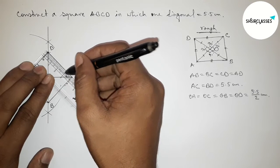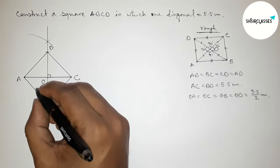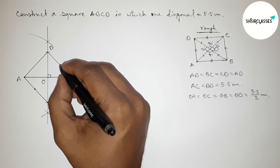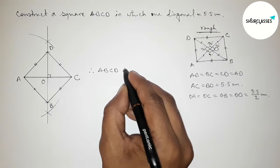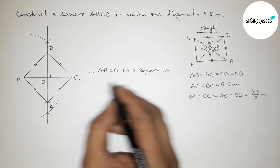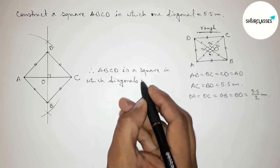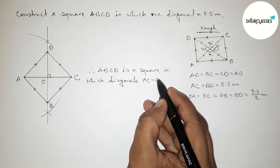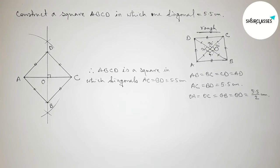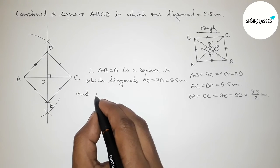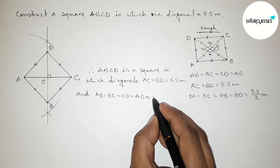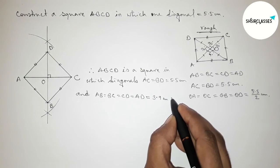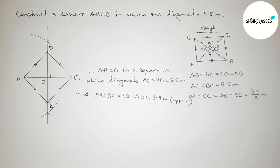Checking the length of each side of the square — it measures approximately 3.9 centimeters. All sides are equal. Therefore, ABCD is a square in which the diagonals AC equals BD equals 5.5 centimeters, and the length of each side AB equals BC equals CD equals AD equals approximately 3.9 centimeters.